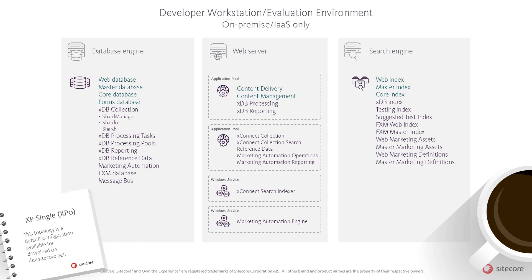Please note that the two worker roles — the XConnect Search Indexer and the Marketing Automation Engine — are installed as Windows services in on-premise installations. This on-premise configuration is called XPSingle and is available as a download on dev.sitecore.net for on-premise or IaaS setups. The topology is configured as a set of Web Deploy Packages, or WDPs, along with a configuration file for the Sitecore Installation Framework, or SIF. Please refer to the Sitecore Installation Guide on how to set up the XPSingle configuration.